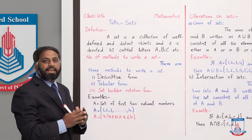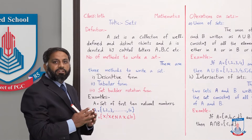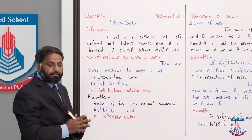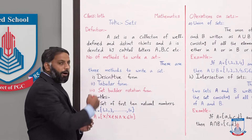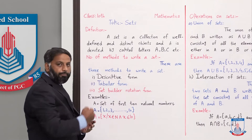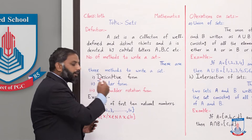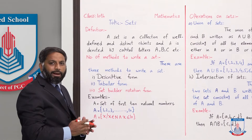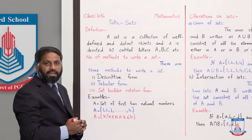اب ہم نے سمجھنا ہے کہ کسی ایک set کو لکھنے کے کتنے methods ہیں۔ There are three methods to write a set: number one — descriptive form, number two — tabular form, and number three — set builder notation form۔ ان تینوں methods کو ہم example سے سمجھیں گے۔